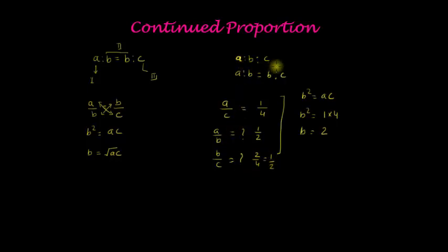So if a, b, c are in continued proportion, and a is to c is equal to 1 into 4, then a is to b is equal to 1 into 2, and b is to c is also equal to 1 into 2.